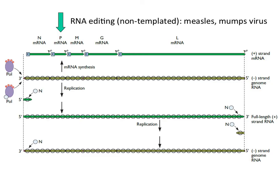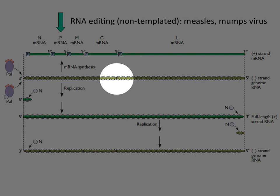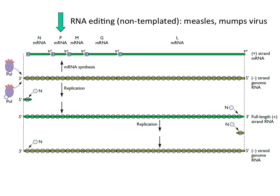The last source of diversity is very interesting because it's not templated — it's not based on a polymerase recognizing a sequence. Everything discussed so far involves a template being copied. But there are some cases where RNA is added in a non-templated fashion. One example occurs in measles and mumps virus. These have a long negative-strand genome and make independent mRNAs early in infection. There's one mRNA called the p-mRNA.